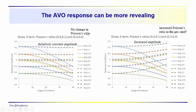With no change in Poisson's ratio, the dashed lines are fairly level across different offsets with only minor changes. When Poisson's ratio actually increases into the gas sand, that produces an increase in amplitude with offset. Depending on whether Poisson's ratio is increasing or decreasing as you go from one interval to another, you'll see quite different behavior with offset. The solid lines show a significant decrease in Poisson's ratio, while other curves show minor changes — from decreasing into the gas sand to increasing into the sand — and the stack traces vary accordingly. This AVO response can be quite revealing.